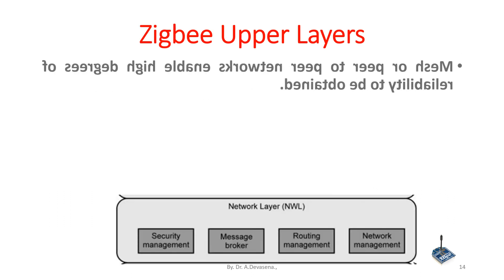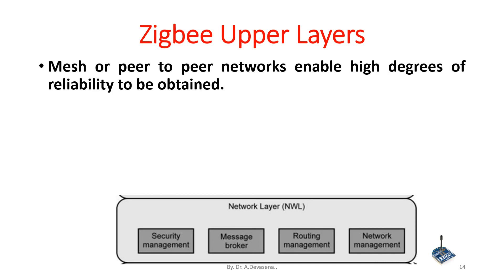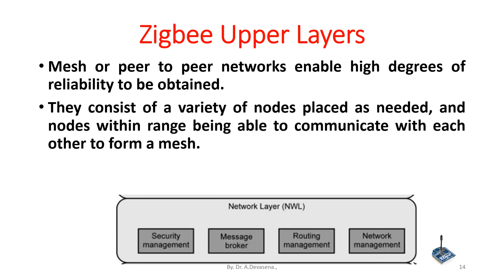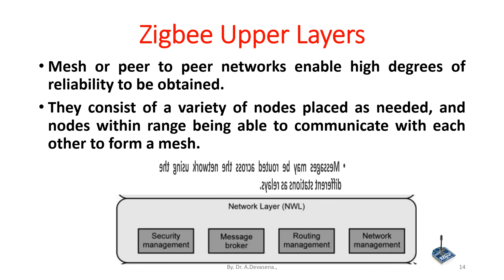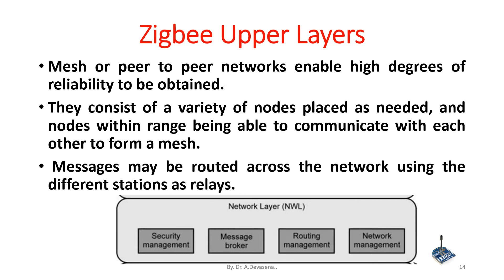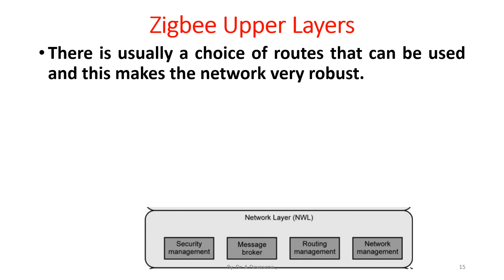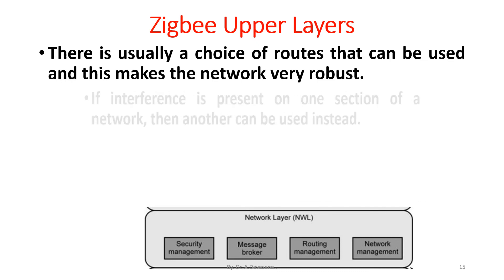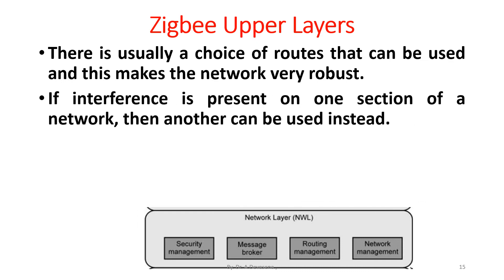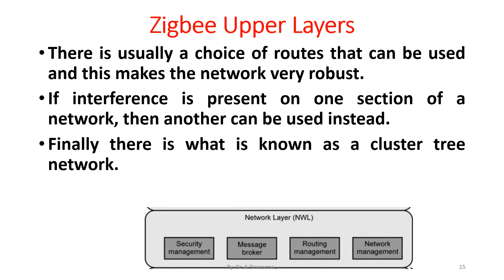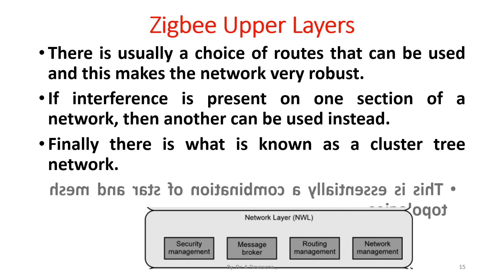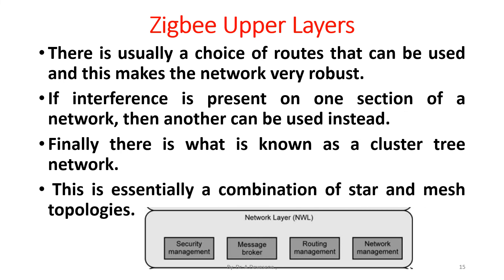Mesh or peer-to-peer networks enable high degrees of reliability. They consist of a variety of nodes placed as needed, with nodes within range able to communicate with each other to form a mesh. Messages may be routed across the network using different stations as relays. There is usually a choice of routes available, making the network very robust. If interference is present on one section, another route can be used instead. A cluster tree network is essentially a combination of star and mesh topologies.